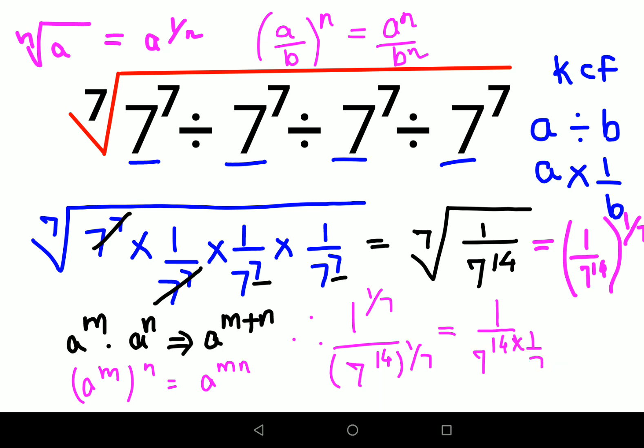Now if you see, the indices are canceling—7 and 7 cancel, leaving 2. So I am left with 1 upon 7 squared. I can say the final answer is 1 upon 7 squared, or 1 upon 49. Either way, the answer is absolutely correct.